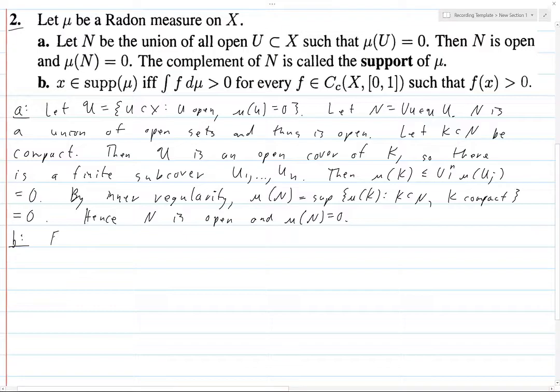All right, now for B. So, we're going to do one direction. We're going to suppose that X is in the support of mu, which we know is equal to the complement of N.